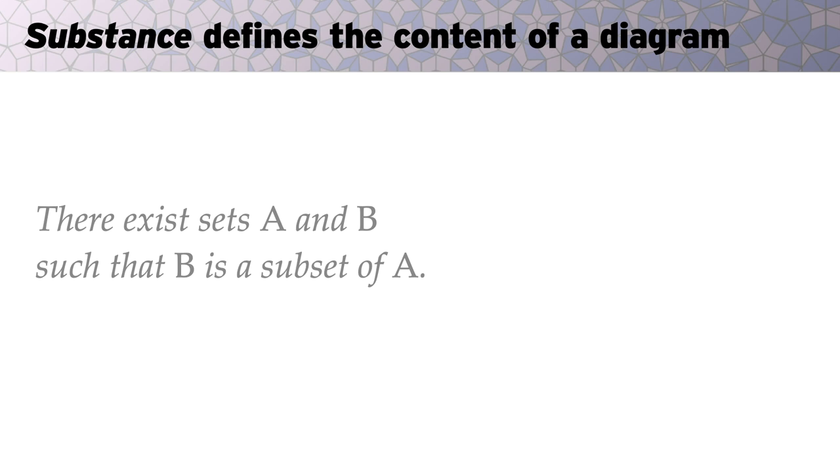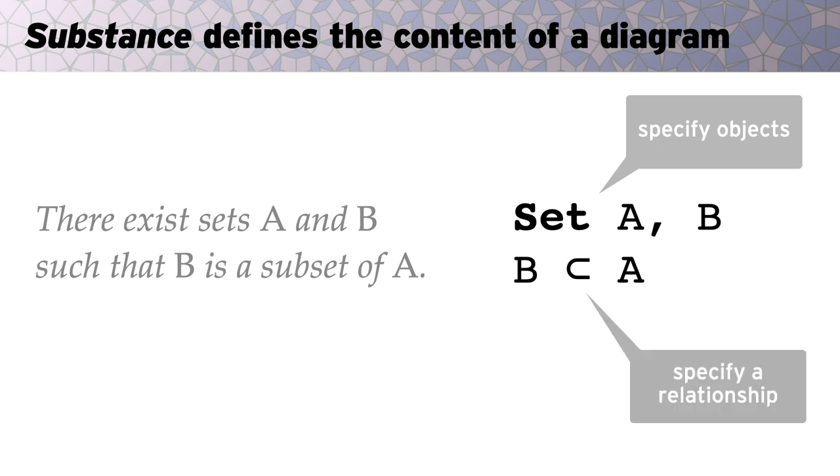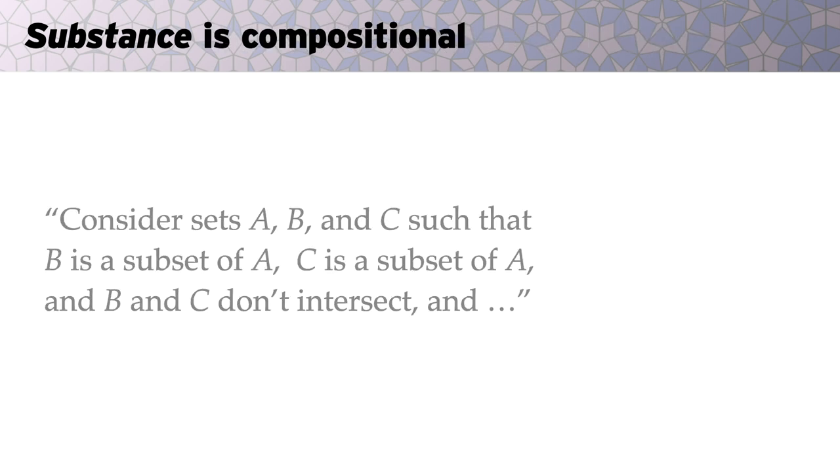These assertions are concise and completely abstract. Here, for instance, there is no further specification of what a set is or what it contains. Substance programs look very similar. Their sole purpose is to declare objects and to assert abstract relationships among objects. Like math, substance is also compositional. Very complex relationships can be built up by declaring additional objects and a web of atomic relationships that must hold.